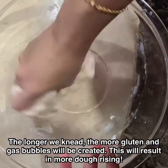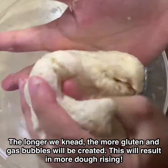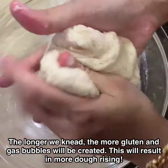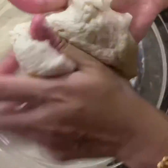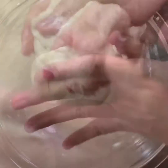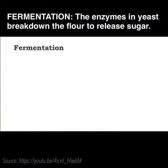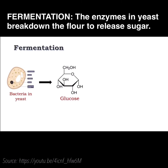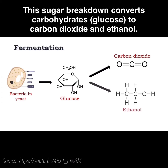So, the longer we knead, the more gluten and gas bubbles will be created. This will result in more dough rising. Then, we let the dough rest to let the fermentation process occur. It is the process where the enzymes in yeast break down the flour to release sugar. This sugar breakdown converts carbohydrates to carbon dioxide and ethanol.